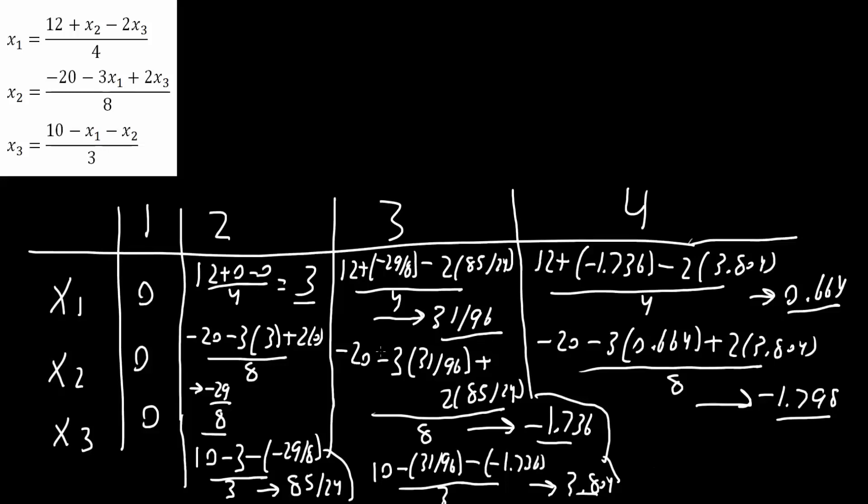Finally, we'll do the last one. So again, x1 is now 0.664, and x2 is negative 1.798. So we plug it in, so 10 minus 0.664 minus parentheses minus 1.798, divided by 3, and we would get 3.711.